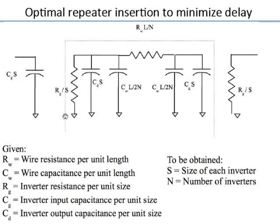In a single segment, the inverter drives the wire with the next inverter as the load. The inverter model has output resistance Rg/s, output parasitic capacitance CD × s, and input gate capacitance CG × s. The wire is represented by a pi model, and the load of the next stage is gate capacitance CG × s. The same inverter size is used for all segments.